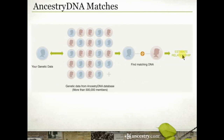Let's start by talking about Ancestry matching. Here's how the matching process works. When you submit a DNA sample — whether that was your own sample or a family member's — that DNA sample is compared to all of the samples we have in our database. As of the time of this video, that is more than half a million samples. When we find matching DNA, based on how much DNA you share, we can estimate a relationship.